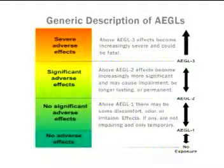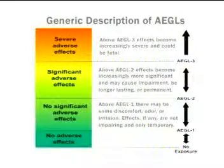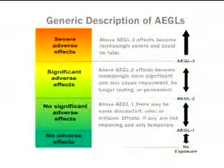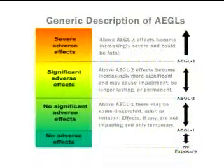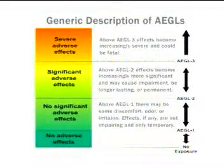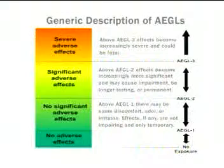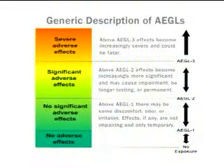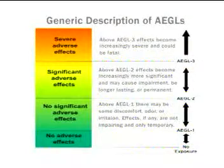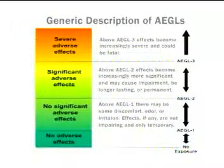Airborne concentrations below the AEGL-1 value represent exposure levels that can produce mild and progressively increasing effects that are transient and not disabling. With increasing airborne concentrations above each AEGL, there is a progressive increase in the likelihood of occurrence and severity of effects. The AEGL-1 value is considered by the National Advisory Committee convened by the EPA and the National Research Council to be the lowest observed effect level that could be experienced without danger to the public, including vulnerable populations such as the elderly and children.